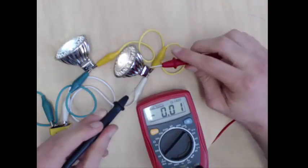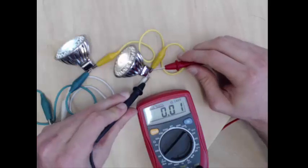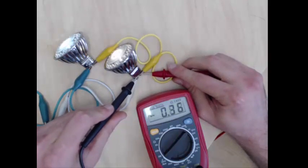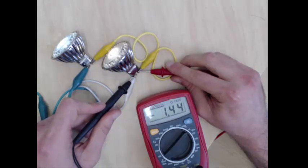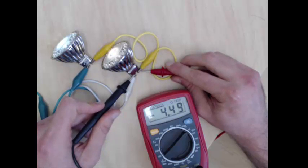It would be the same with the other one here. If I measured the potential difference between this point and this point in the circuit, I'm also reading approximately 4.5 volts.